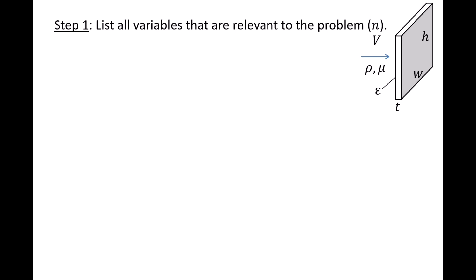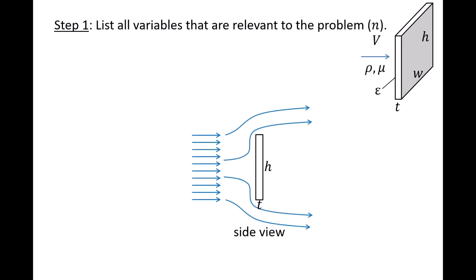The only variables which might not be important are the thickness t and the surface roughness epsilon. This is where you need to have good insight into the behavior of fluids as they flow around blunt objects like the sign in this example. If we look at the side view of the sign and were able to visualize the flow under typical conditions, we would see that the incoming flow is redirected around the sign and the flow separates from the sign at its edge. Behind the sign, the flow is swirling and turbulent. This separated flow causes a significant pressure drop, with the pressure lower behind the sign compared to in front of the sign. It's this pressure difference that's responsible for almost all of the drag force experienced by the sign.